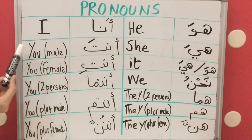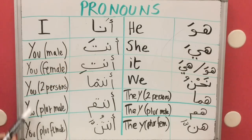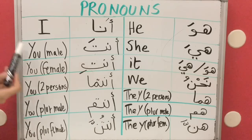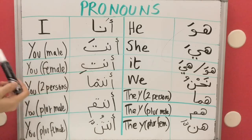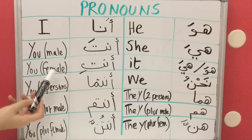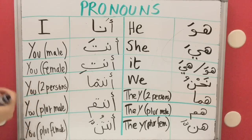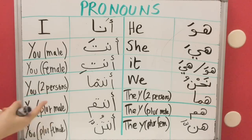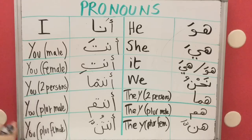Then we have 'you'. Now, 'you' is divided into five parts: you for a male, you for a female, you for two people, you for more than two people who are male, and you for more than two people who are female. We will discuss and explain them now.